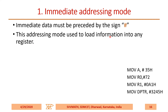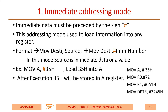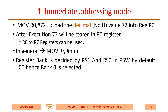This addressing mode is used to load information into any register. The format is MOV destination, #immediate_value. MOV A, #35H loads 35H into accumulator A. After execution, 35H is stored in the A register. MOV R0, #72 loads the decimal value 72 into register R0. Whenever 'H' is missing, it is treated as decimal and its equivalent hexadecimal is loaded into R0.